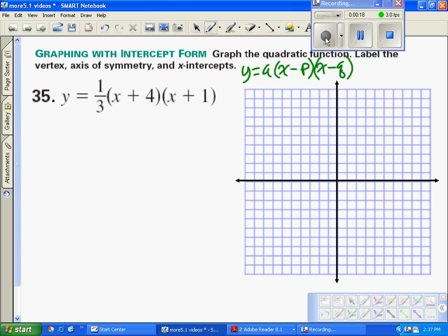The easiest thing to find right now is those x-intercepts. We know that if y goes to 0, then either x plus 4 or x plus 1 has to go to 0. So my zeros are x equals negative 4 and negative 1.